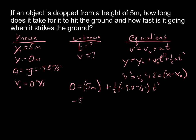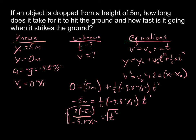So first thing I do is subtract my 5 over there. So negative 5 meters equals one half negative 9.8 meters per second squared times t squared. So I'm going to multiply by 2 and divide by negative 9.8. So 2 times negative 5 meters over negative 9.8 meters per second squared equals t squared. So to solve for t, I'm going to take the square root of both sides. So t equals 1.01 seconds.